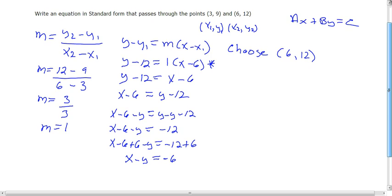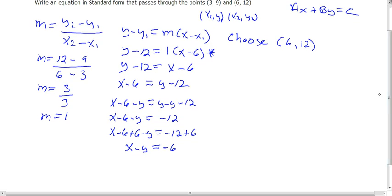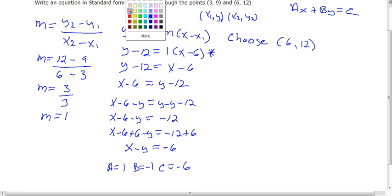And then again, here we have our particular standard form, x minus y is equal to negative six, where a in this case, a is equal to one, we have b is equal to a negative one, and c is equal to a negative six. And as we talked about earlier, if we got here and we really wanted to graph, all we have to do was solve for our intercepts.